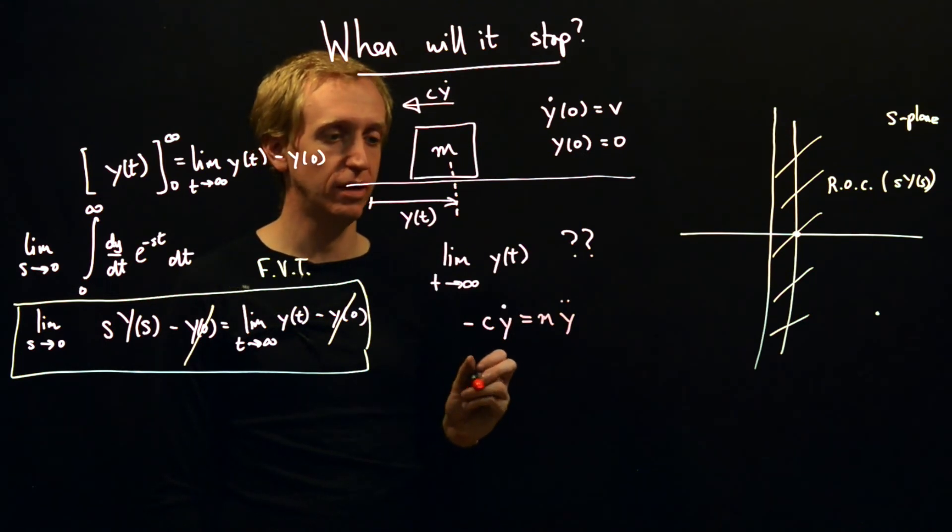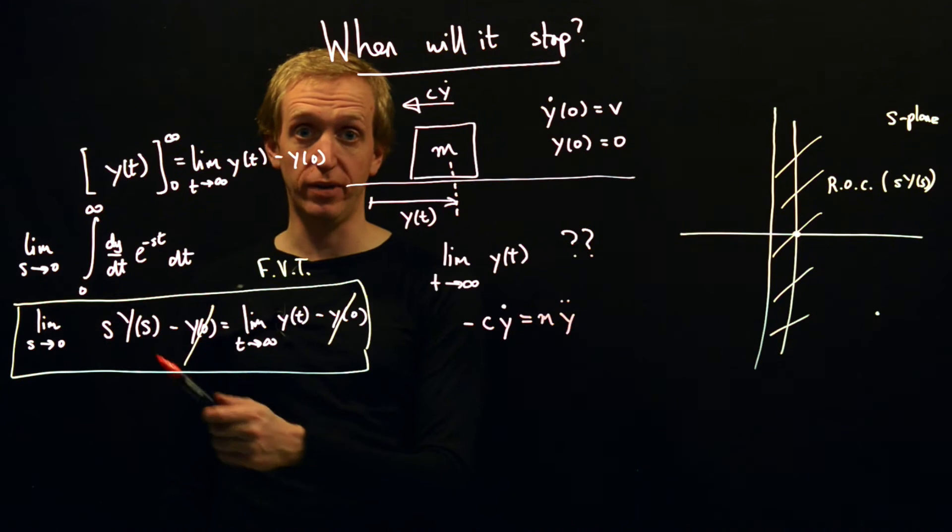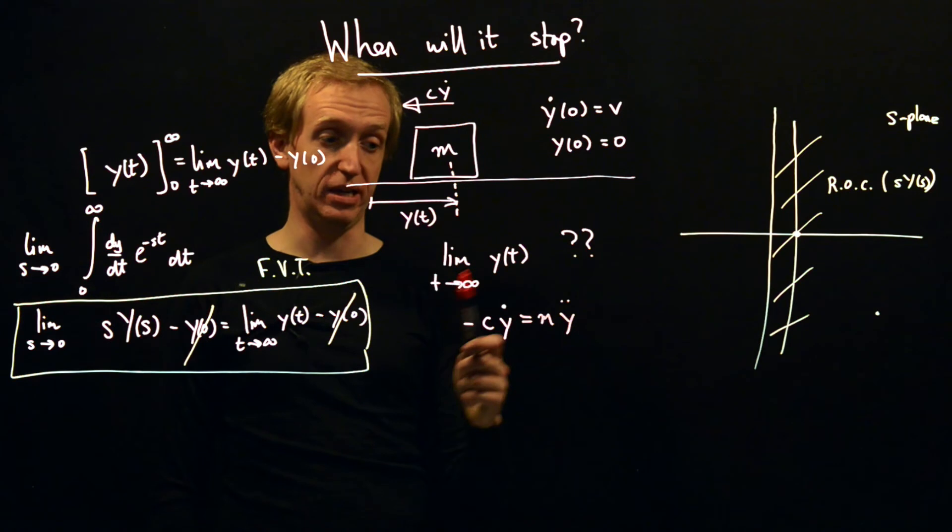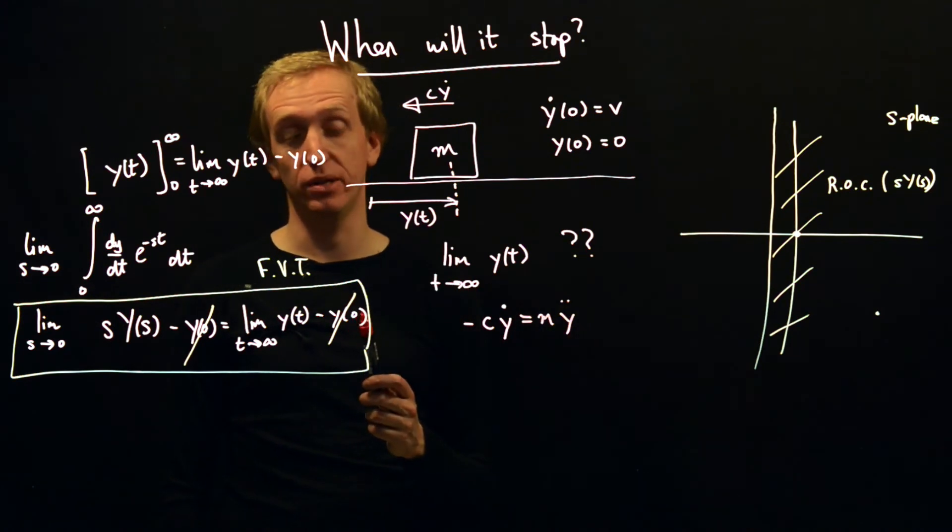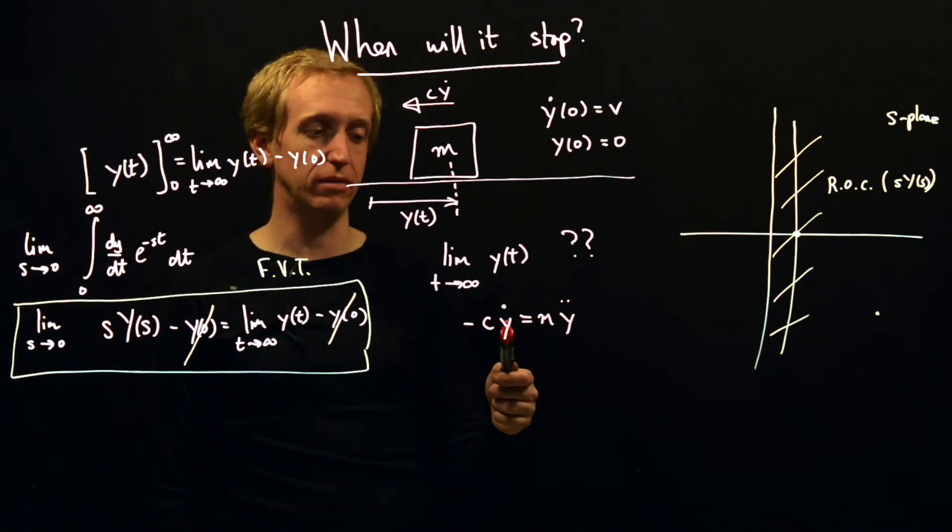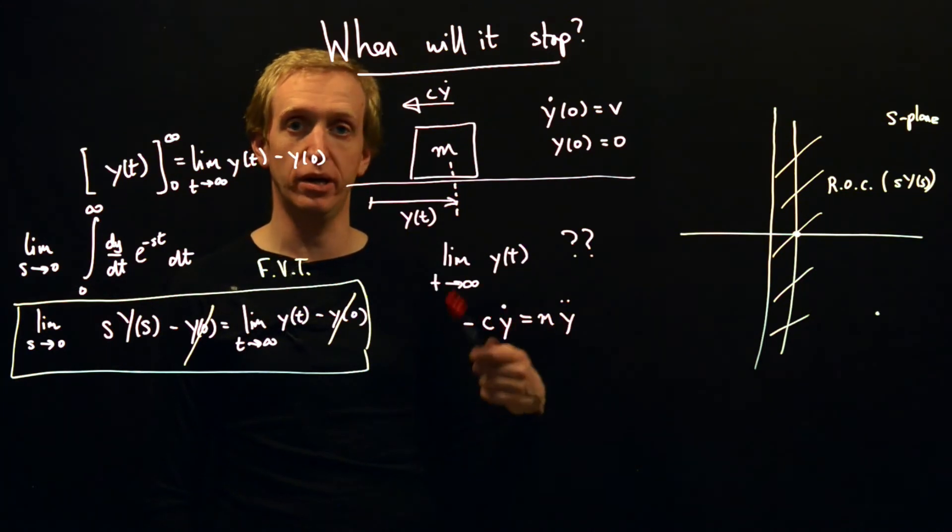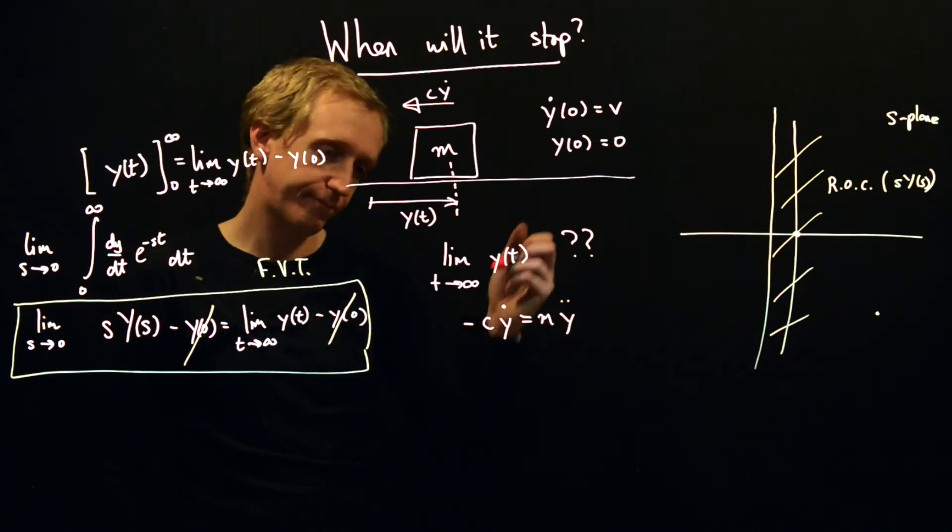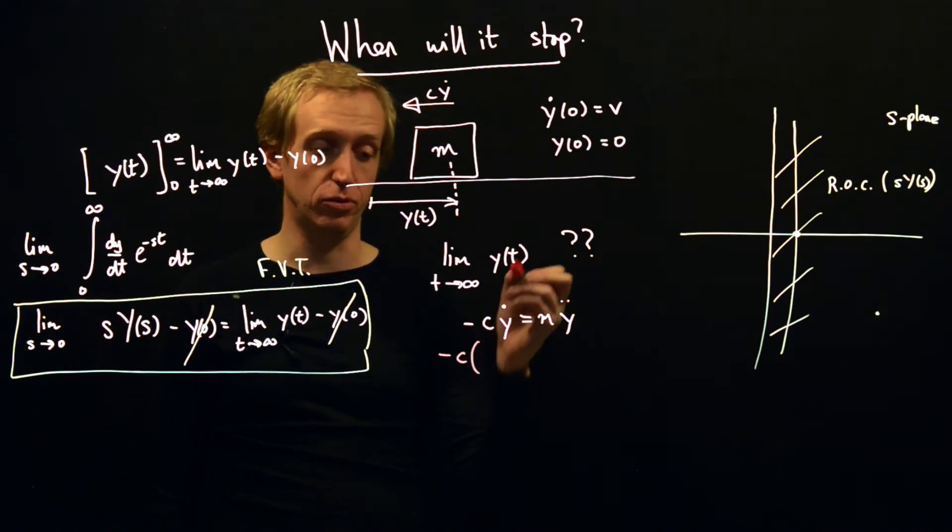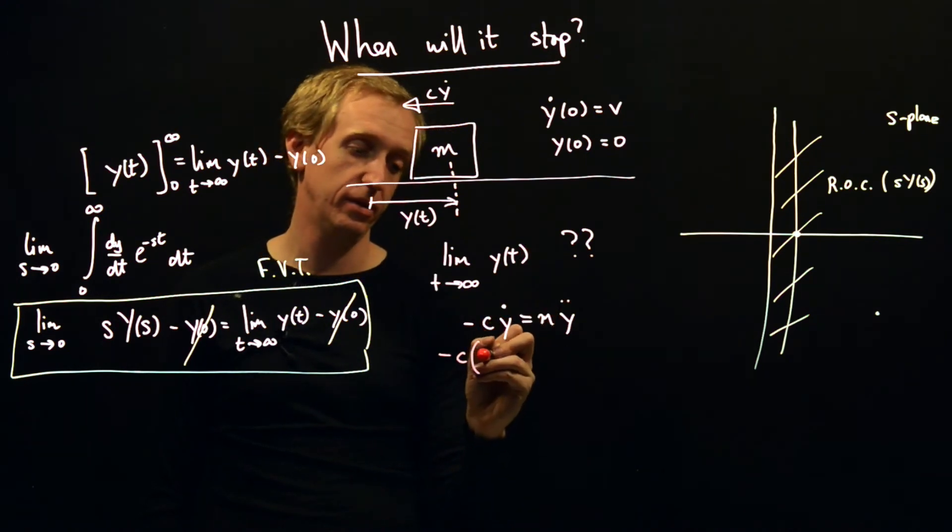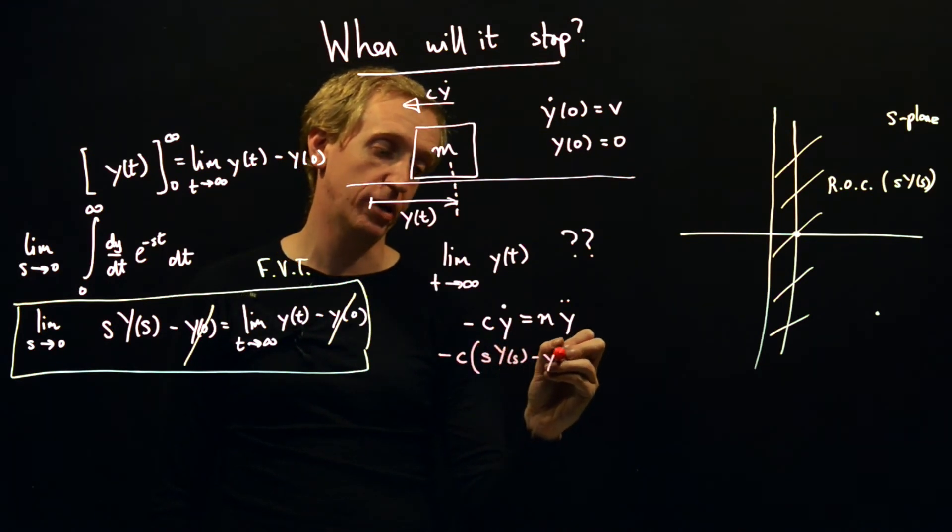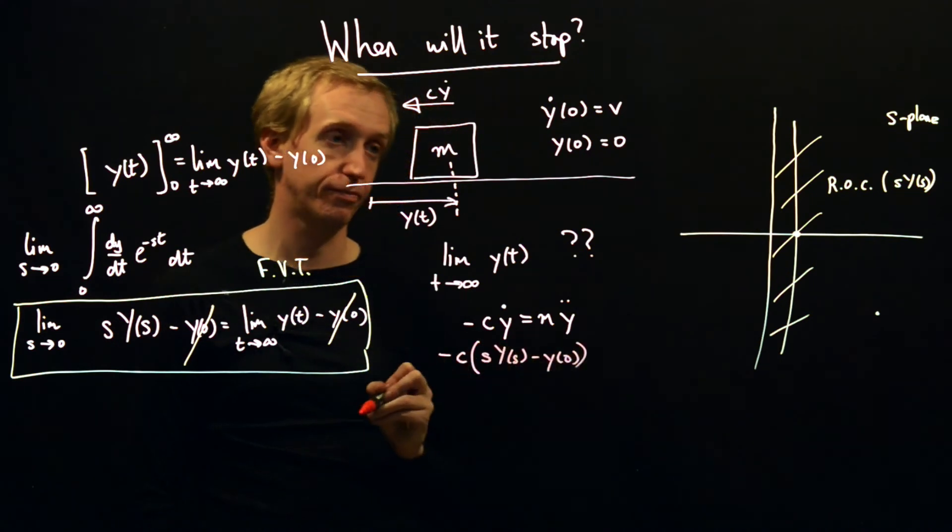We're making progress. Now, in order to apply the final value theorem, we need to get the Laplace transform of y, which means we're going to have to Laplace transform this expression here. And to do that, we're going to have to use our rule for relating the derivatives or the Laplace transform of the derivatives of y to the Laplace transform of y. So let's just do that. And so we have minus c and then just like we saw last time, the Laplace transform of y dot is equal to s times the Laplace transform of y minus y of zero.